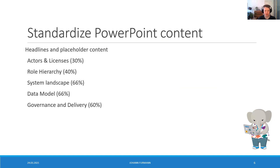The first strategy is to standardize your PowerPoint content. You can already create headlines and placeholder content for most slides. First is the actors and licenses slide — you don't have to fill out the content itself, but you can create the slide, the headline, and the table (always four columns and about six to nine rows). Second is role hierarchy — same again, prepare that slide. System landscape is a very standardized slide. Data model and governance and delivery are also highly standardized parts of your PowerPoint.